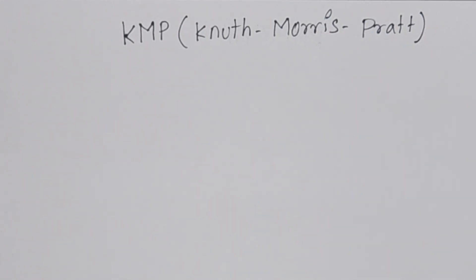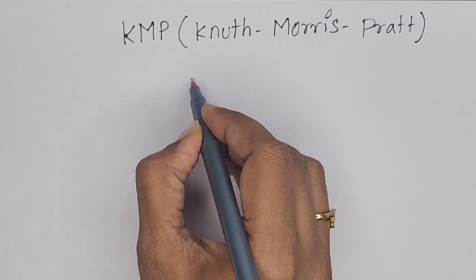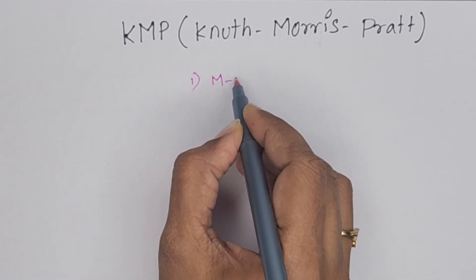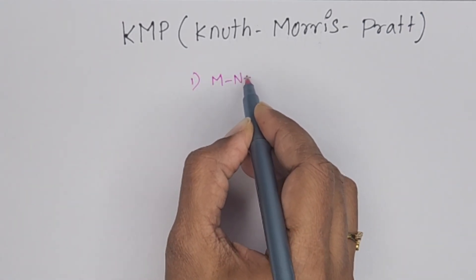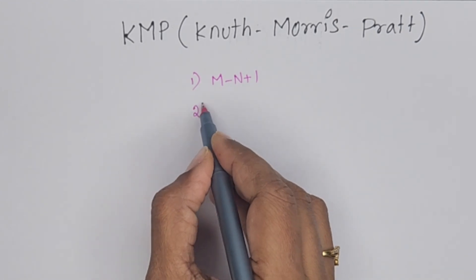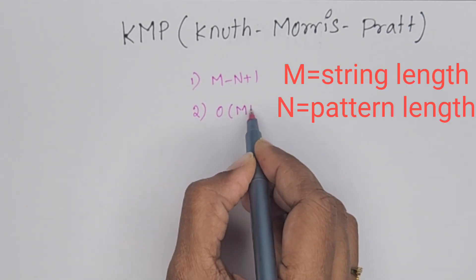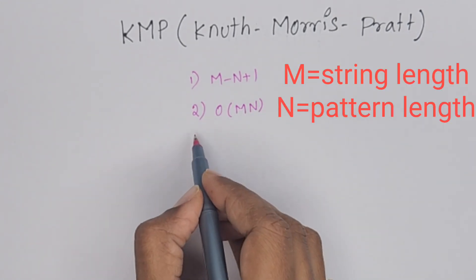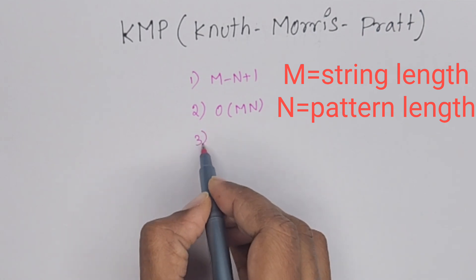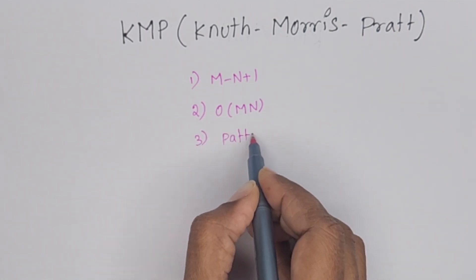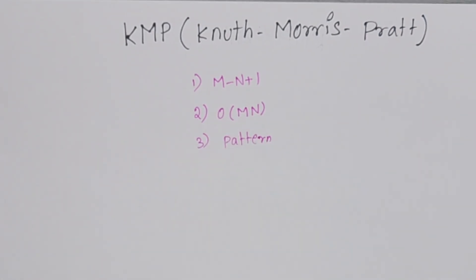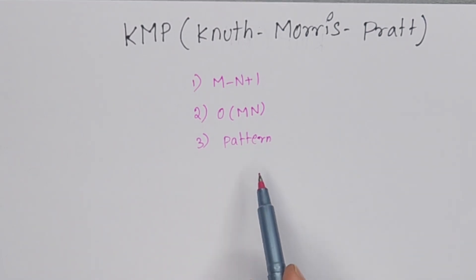In the basic algorithm, the disadvantages are: in the worst case, it requires M minus N plus 1 comparisons, and the time complexity in the worst case is big O of M times N. Also, it does not observe the pattern. So these are disadvantages — it takes more time to search for a pattern in the string.